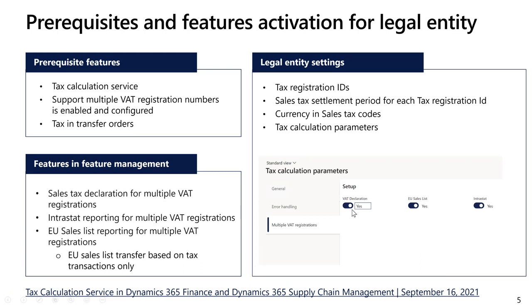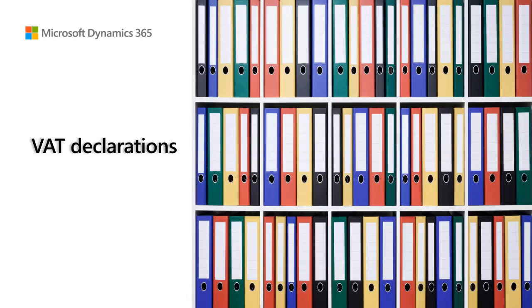Also, you need to create sales tax codes for each VAT ID and define the currency of VAT reporting for each sales tax code. This all relates to features for multiple VAT registration numbers. Here is a link to the demo recording of the Tech Talk where there is more information about how to configure the tax calculation service and multiple VAT registration numbers features. Now we will concentrate on the reporting part.